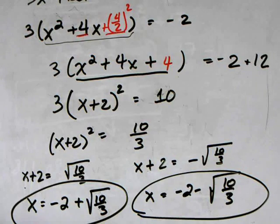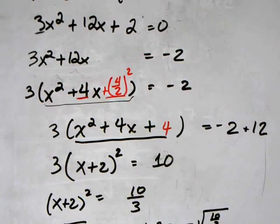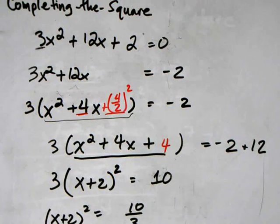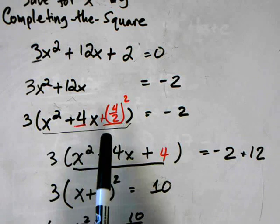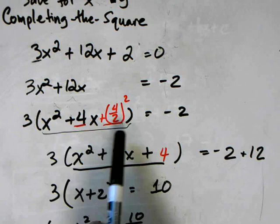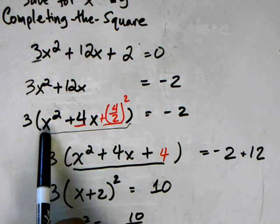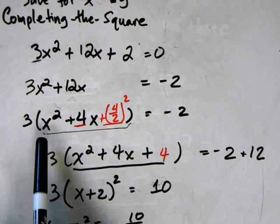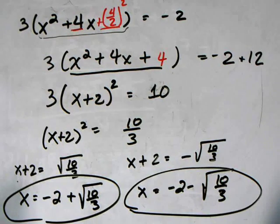Just to recap a little bit, the key step here in this entire process is the completing the square step where I take half of this number and then square it. But before I do that, I had to factor out the leading coefficient here so that I have a coefficient of x squared that's equal to 1.